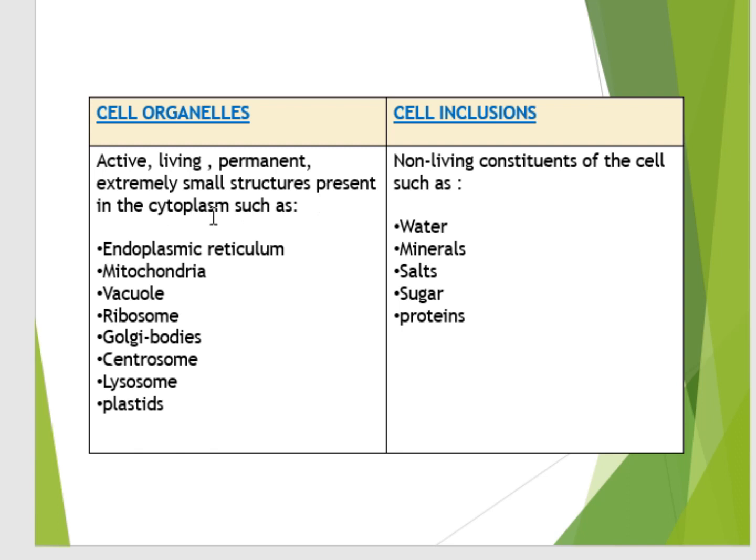Such as endoplasmic reticulum, mitochondria, vacuole, ribosome, Golgi bodies, centrosome, lysosome, and plastids. All these organelles are the living structures of the cell. On the other hand, cell inclusions are the non-living constituents of the cell, for example water, minerals, salt, sugar, and proteins.